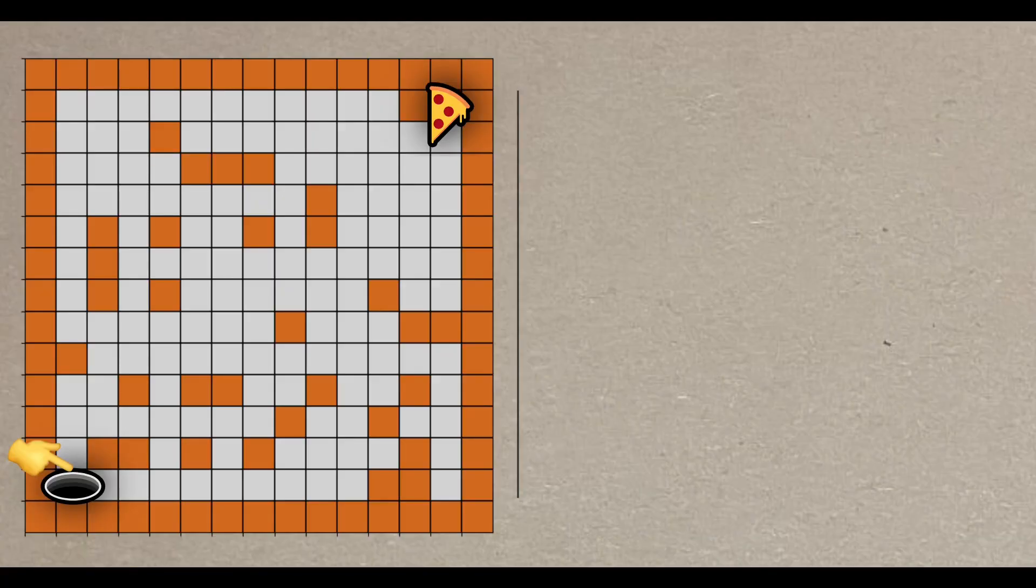Let's visualize this maze. The manhole here represents the starting point, and the objective is to reach the pizza as quickly as possible. However, there is one constraint: these orange cells are walls and can't be crossed.